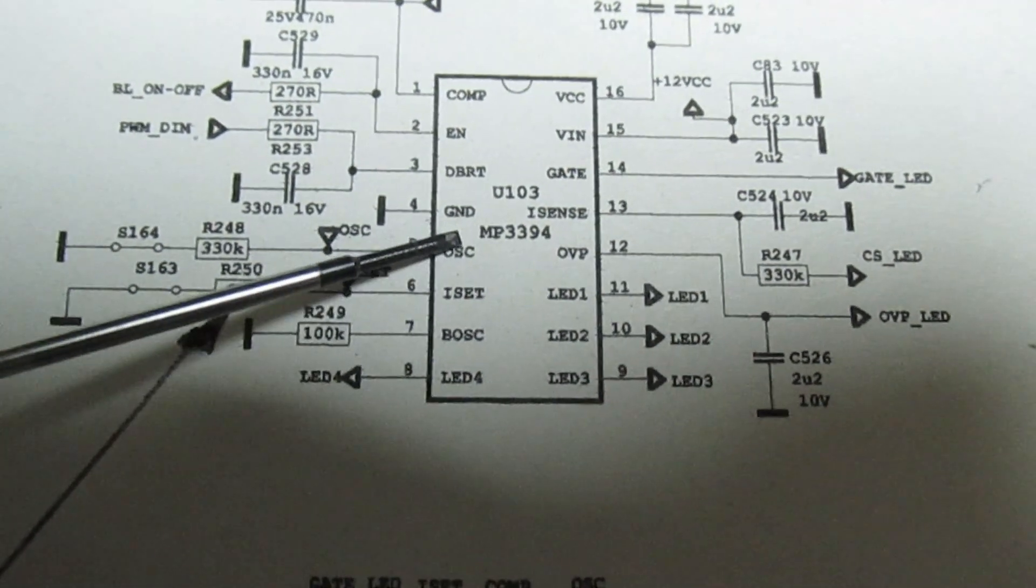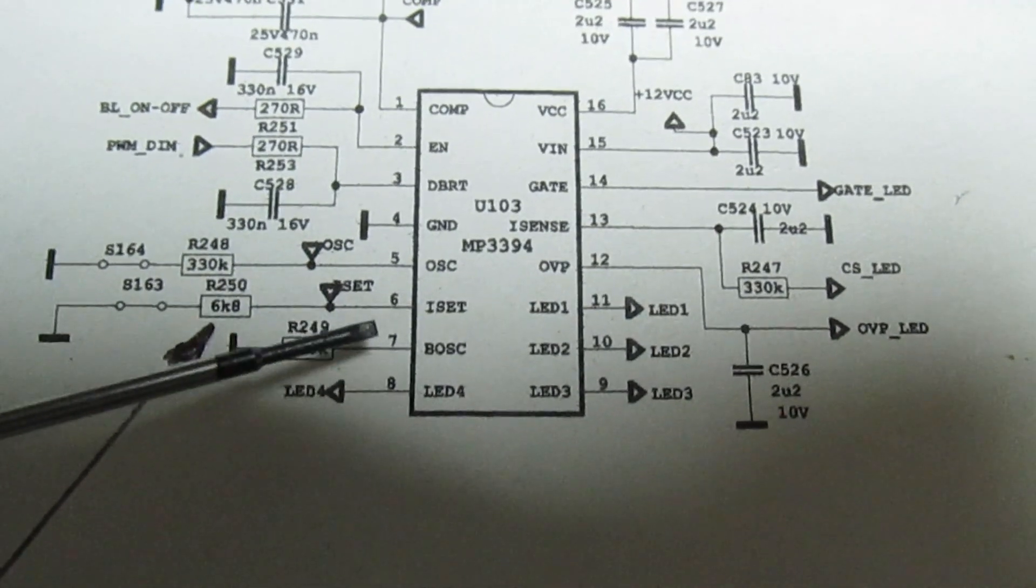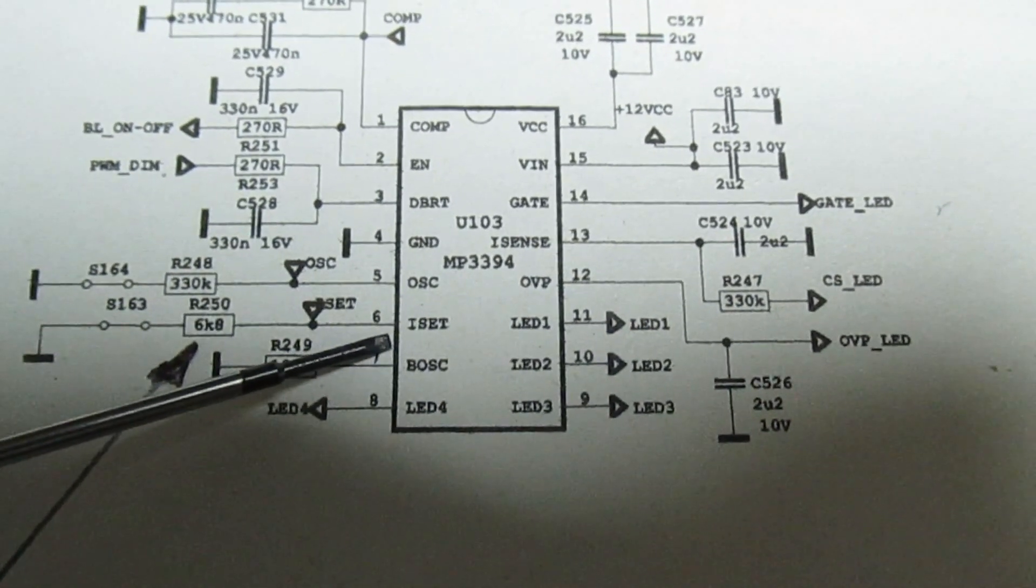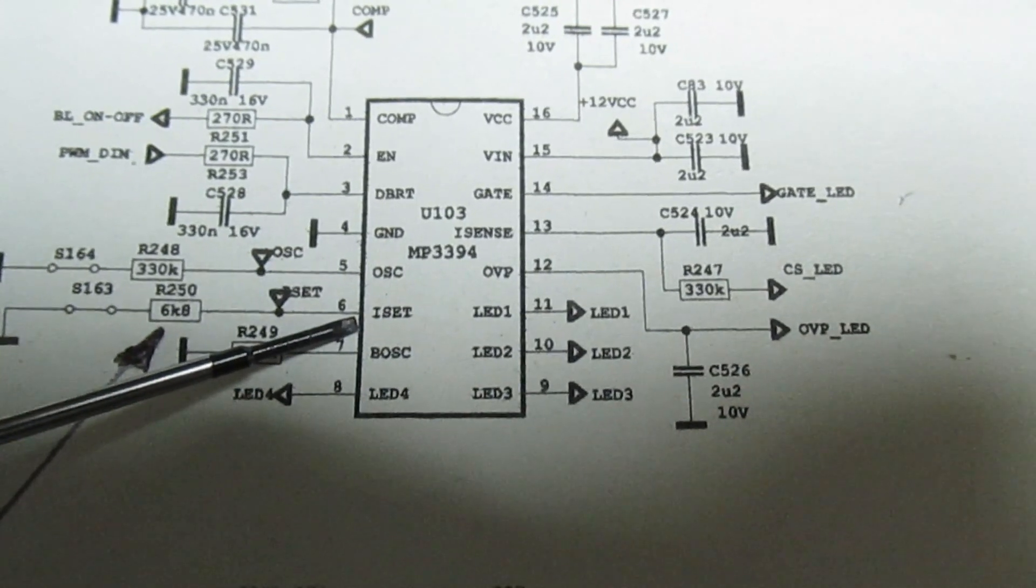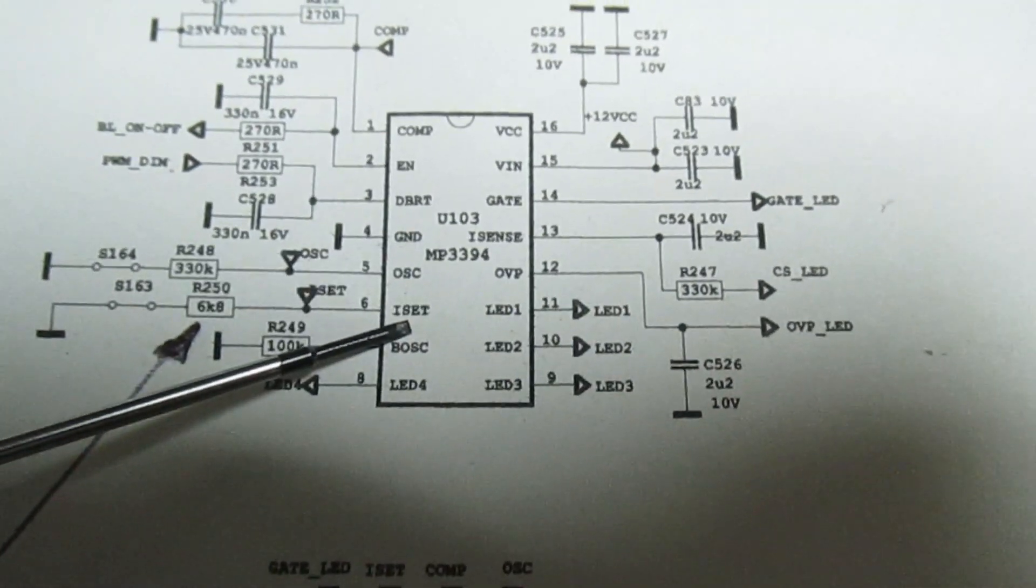So what you need to look at is this is the diagram for the 17 IPS 12. You need to look at the resistor combinations connected to pin six, which is the current set.